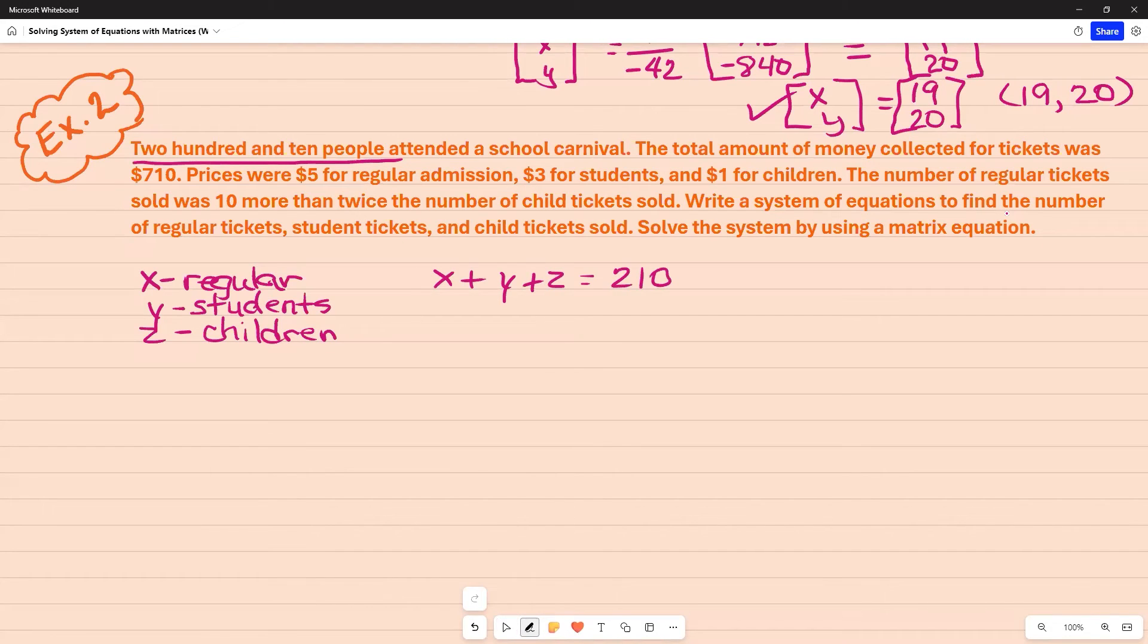And then if I keep reading, I see that I have a total amount of tickets for $710. And this is the cost of each one. So for the regular one, I have five. And then for students, I had three. And for a child, I had just one. So I'm just going to label that Z. And it said the total was $710. X is going to equal 10 more than twice the child's ticket. And child's ticket is represented by Z. And now I have my three systems.